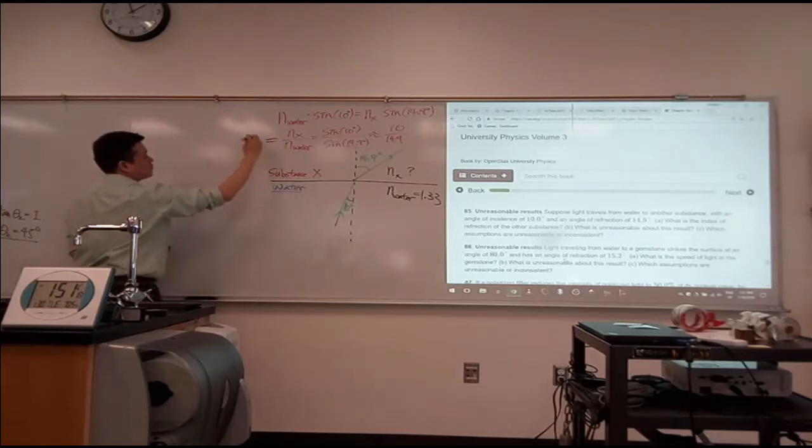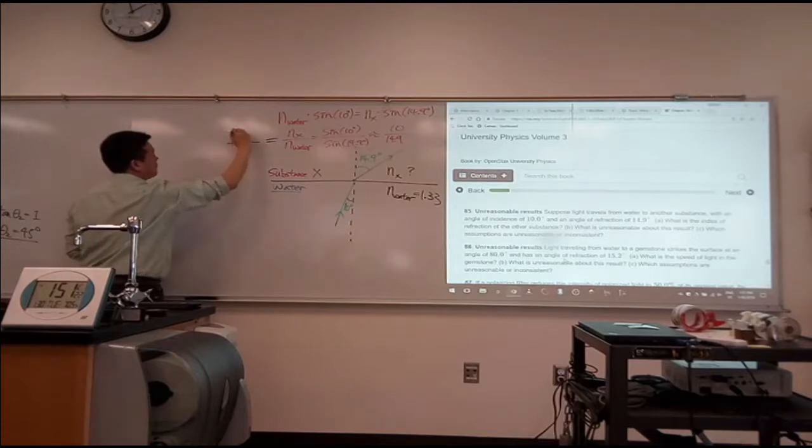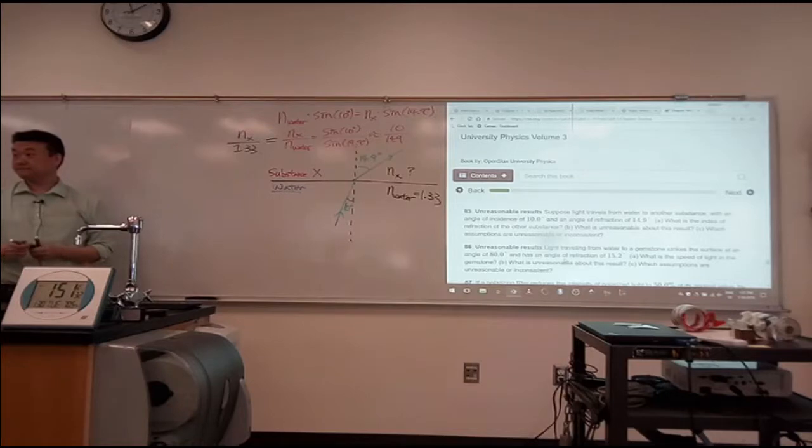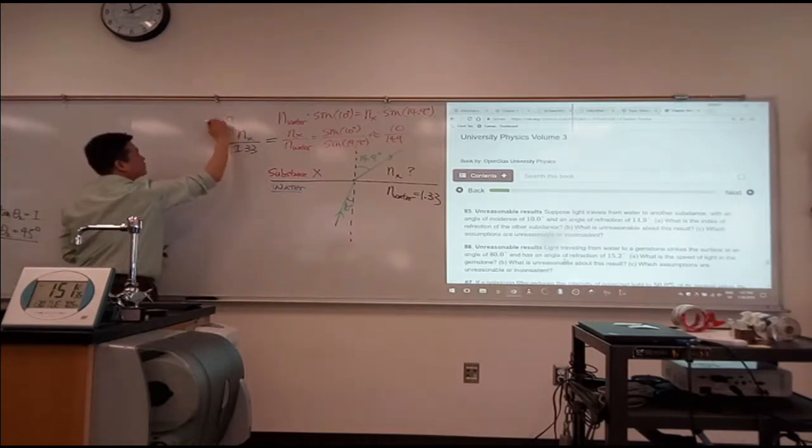The left-hand side is going to look like unknown nx over 1.33. For those of you who finished the calculation for nx, what did you get? 0.9. 0.9, right?